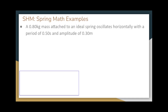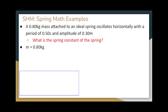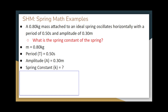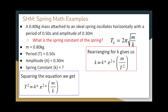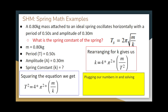A 0.8 kilogram mass is attached to an ideal spring oscillating horizontally with a period of 0.5 seconds and an amplitude of 0.3 meters. We want to find the spring constant. Using T_s equals 2 pi times the square root of m over k, we square both sides to get T squared equals 4 pi squared times m over k, then rearrange to get k equals 4 pi squared times m over T squared. Plugging in the values, k equals 130 newton-meters.